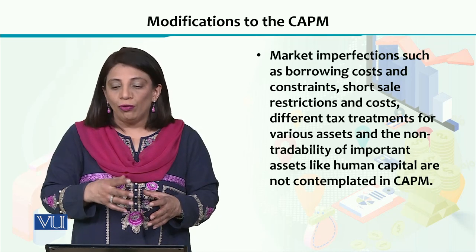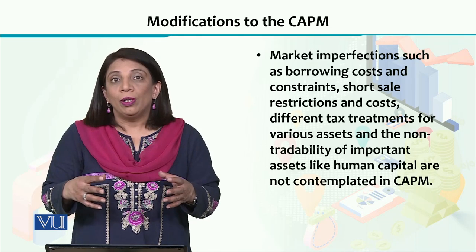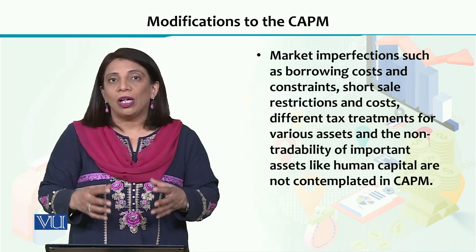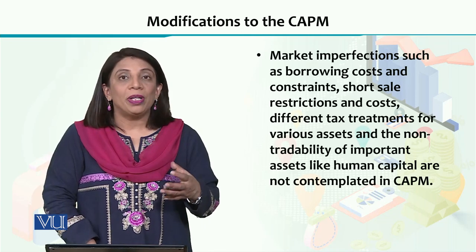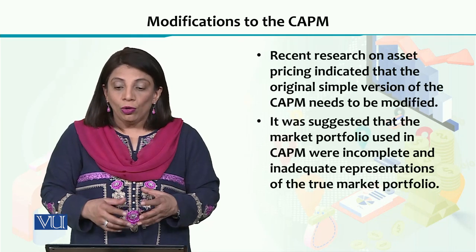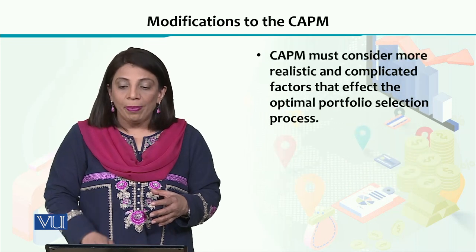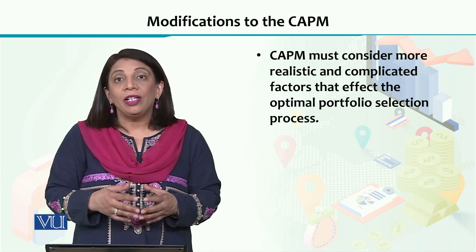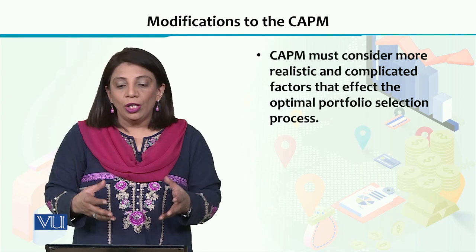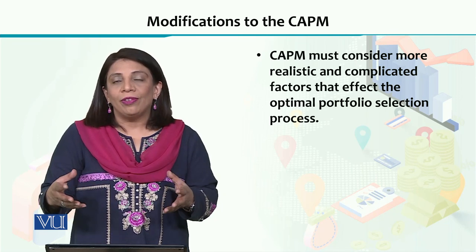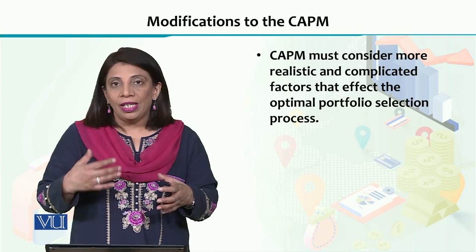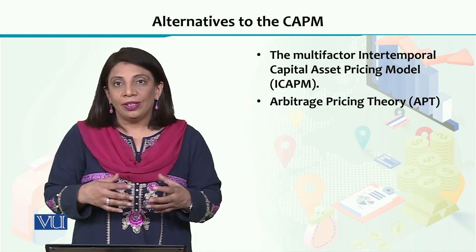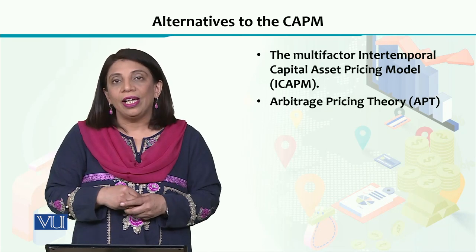To account for those imperfections, there should be modified versions of CAPM which can account for these market complexities and assess the expected rate of return. We have many such models — referred to as SAK models — which subsequently developed, are more realistic, take into account more complicated factors, and then assess the expected rate of return on the basis of that information.